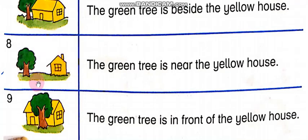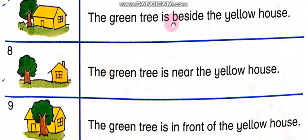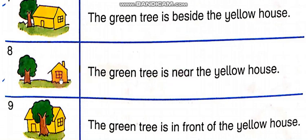In the eighth picture: The green tree is near the yellow house. Jou green tree hai woh yellow house ke karib hai. Beside aur near mein farq yeh hai — beside matlab bilkul saath, near matlab karib. The green tree is near the yellow house.